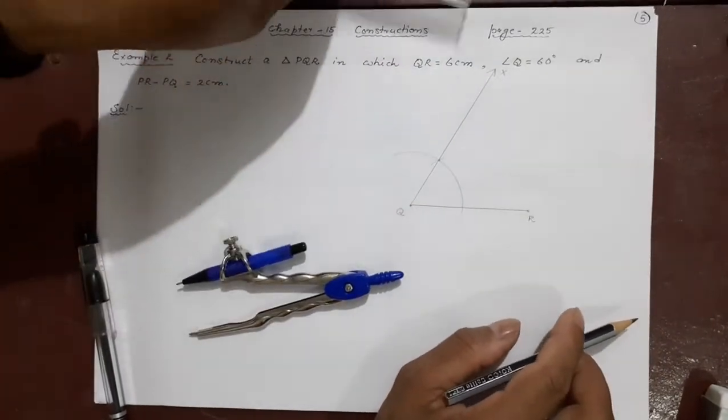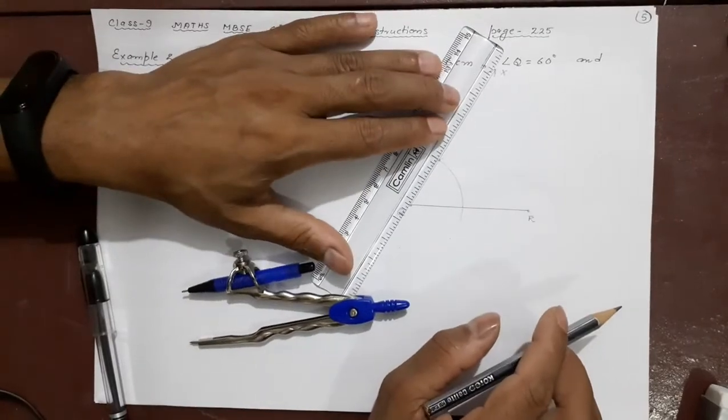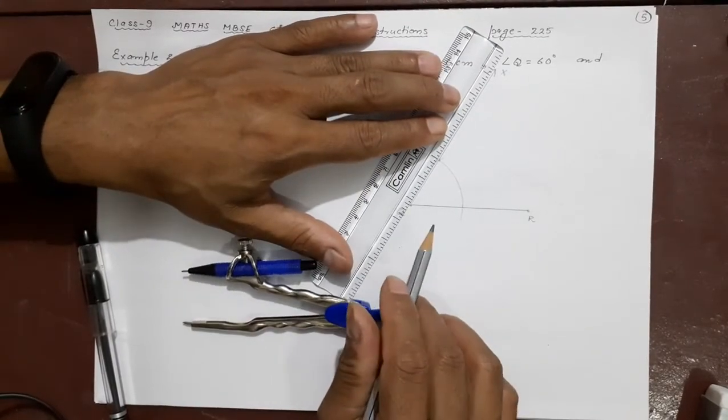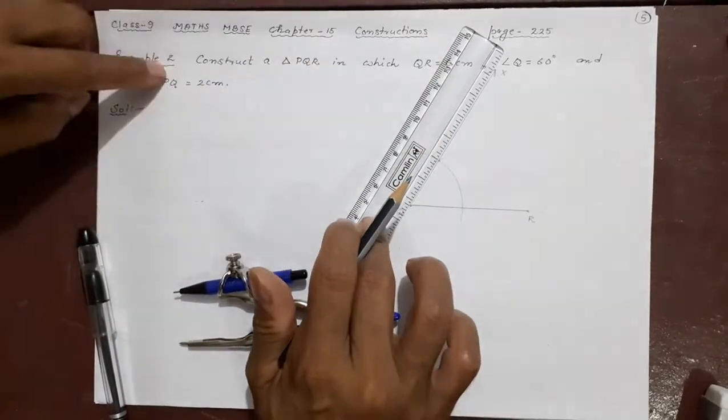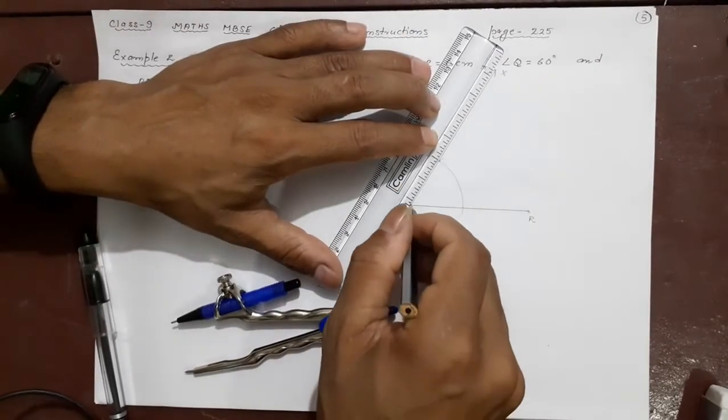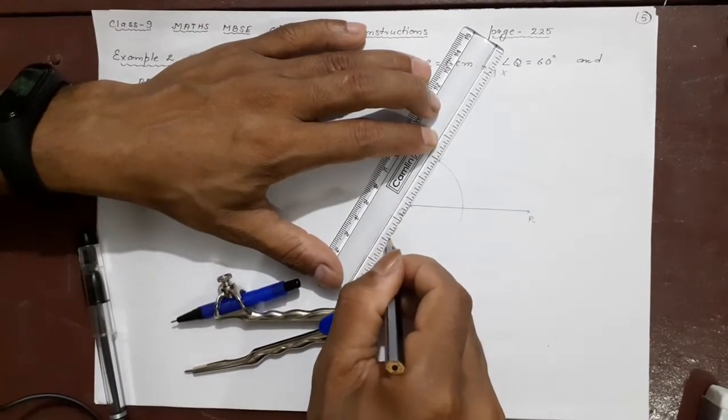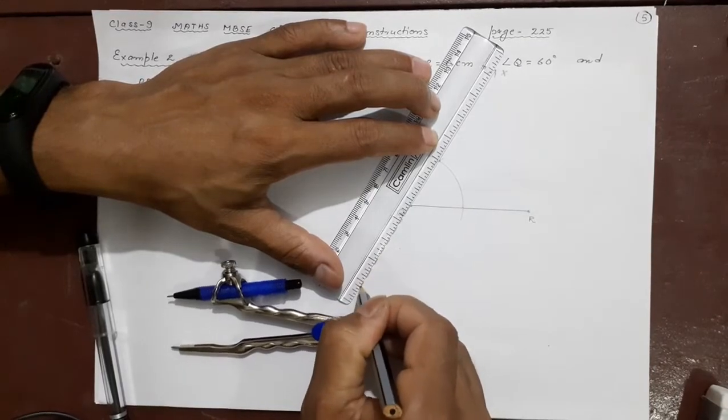Now after that we extend this line. We extend this line slightly more on the below side as well such that 2 cm can be accommodated there. So that is this side. Done.